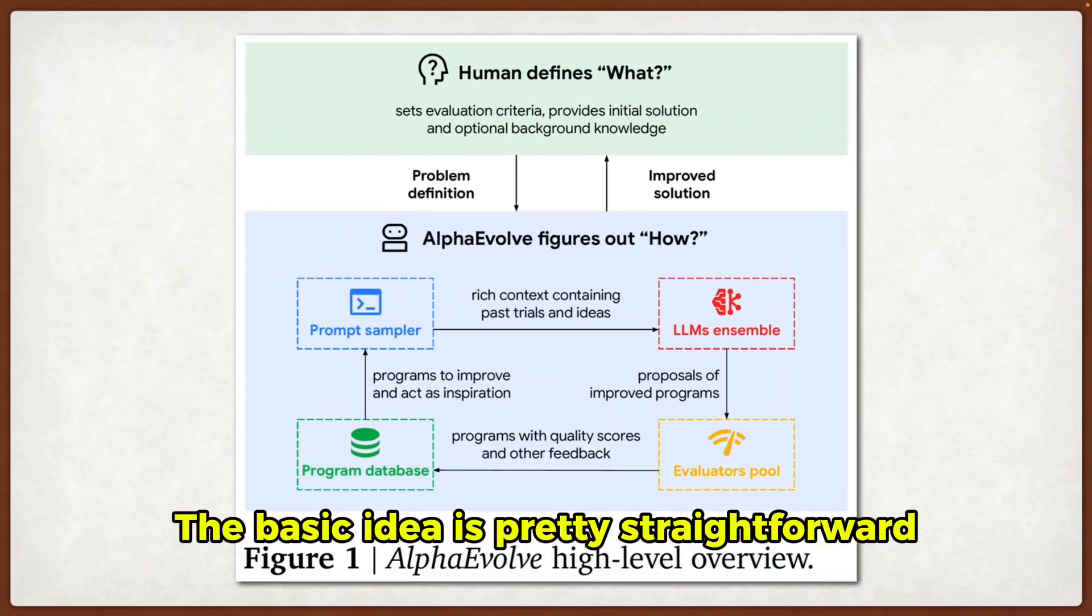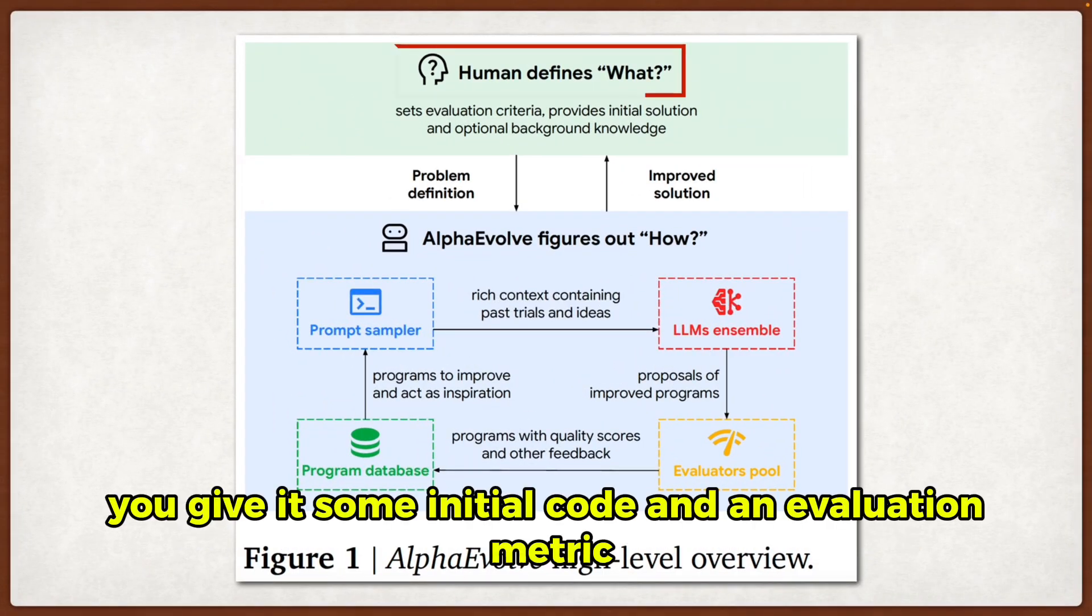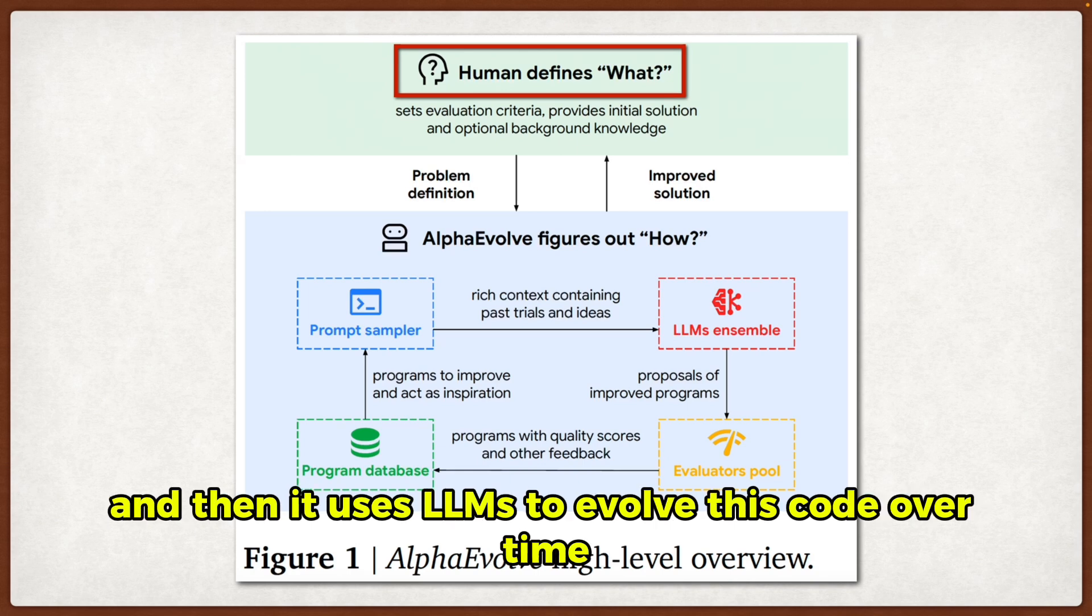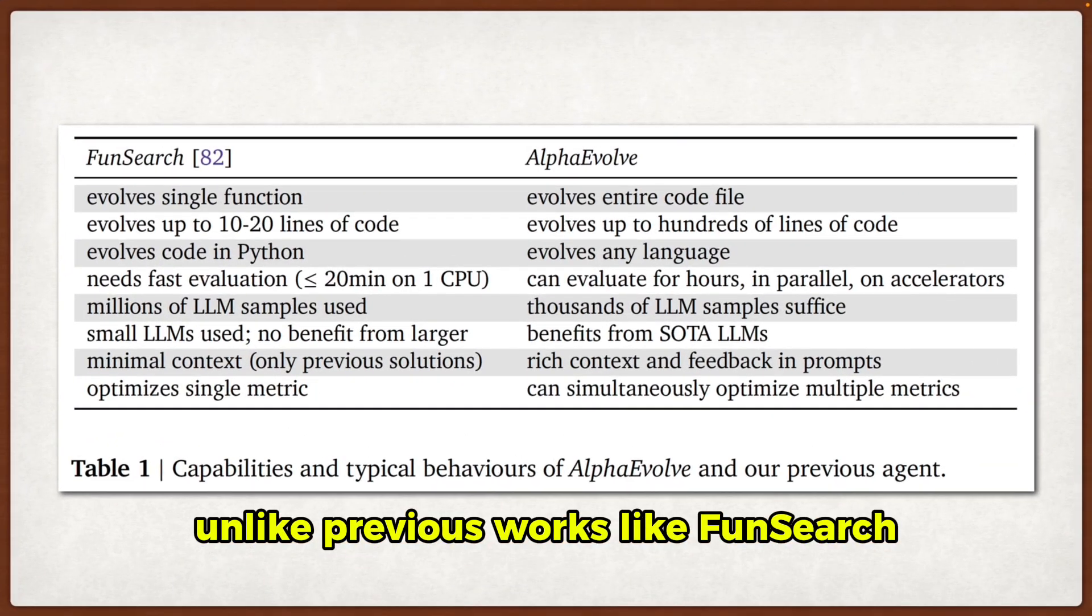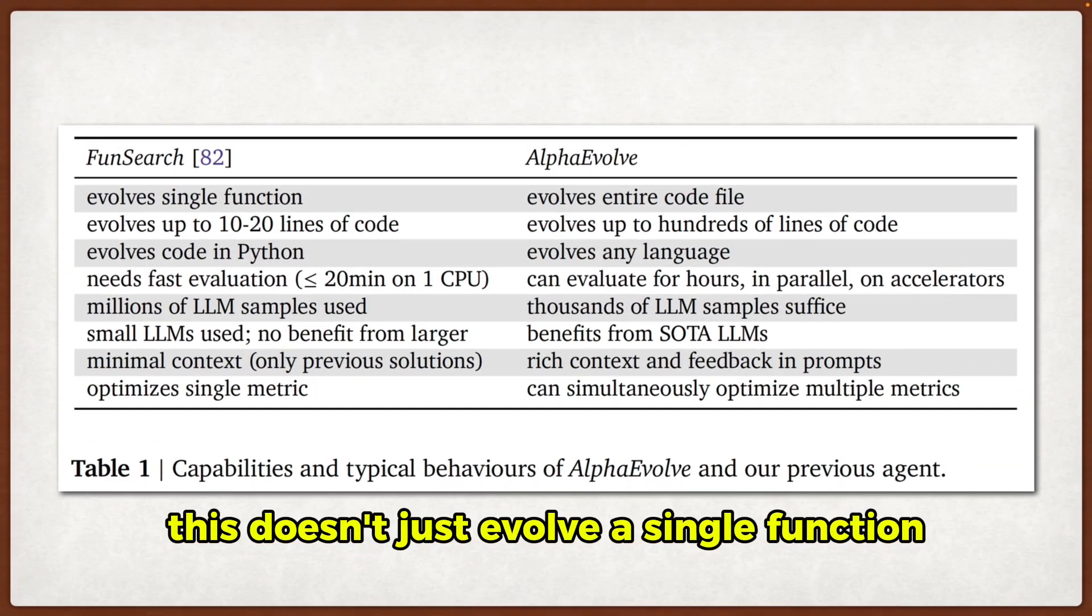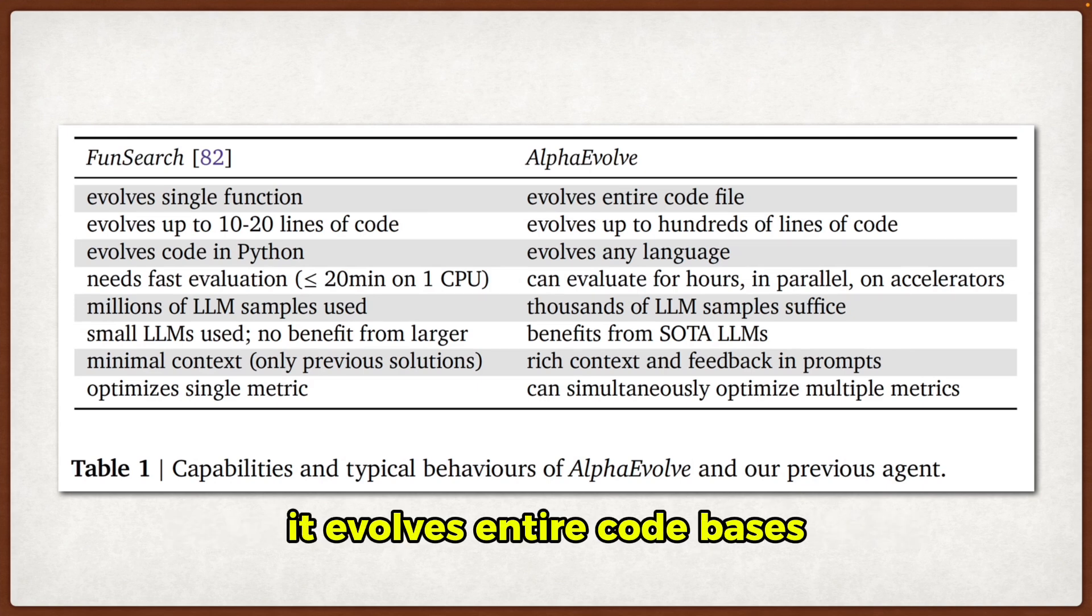The basic idea is pretty straightforward. You give it some initial code and an evaluation metric, and then it uses LLMs to evolve this code over time. But here's the thing, unlike previous works like FunSearch, this doesn't just evolve a single function. It evolves entire code bases.